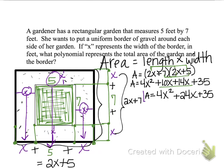So 4X squared plus 24X plus 35. So this would be a polynomial equation that represents the area of the whole entire garden plus the border. Now you could also write it in function form.